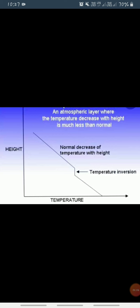This results in the cooling of the air near the earth's surface. The upper layers, which lose their heat not so quickly, are comparatively warm. Hence the normal condition — in which temperature decreases with increasing height — is reversed.